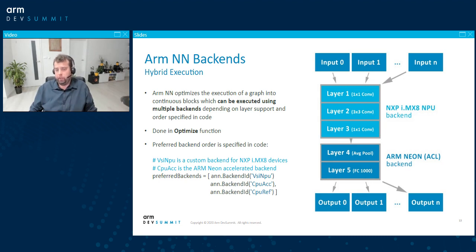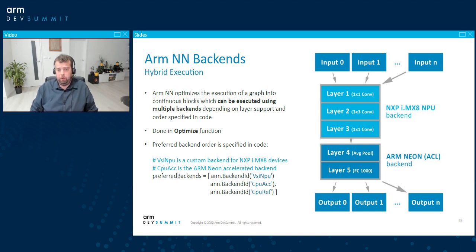It will run all the convolution layers on that backend, and based on how you define the backends you want to use, it will delegate the unsupported layers — in this case the average pooling layer and the fully connected layer — to another backend which enables those. This is all done internally in the optimize function, so as a user you just specify the backends and the software automatically optimizes the whole runtime. During the optimize call, it creates workloads for every layer, and afterwards those workloads are executed during runtime.